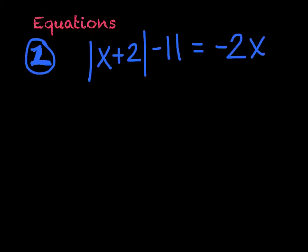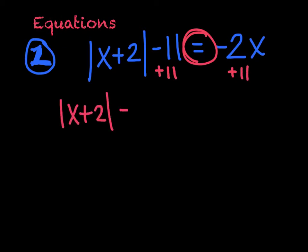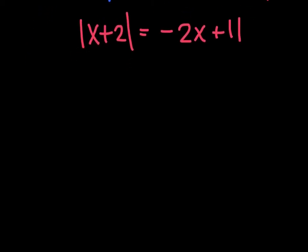Let's attack question one. Looking back at notes, it's under equations because it has an equal sign. Step one is to isolate the absolute value. Common sense tells you to add 11 to both sides, so I've got the absolute value of x plus 2 equals negative 2x plus 11. Step two: write two equations. We stem them off — the first one we leave alone: x plus 2 equals negative 2x plus 11.